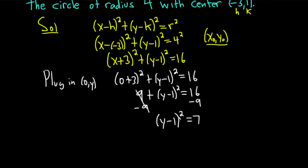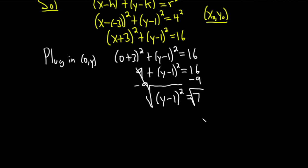To solve this, we need to get rid of the square. We can take the square root of both sides. Whenever you take the square root with a variable squared, you need plus or minus. So y - 1 = ±√7.